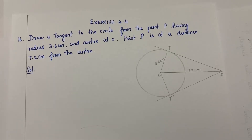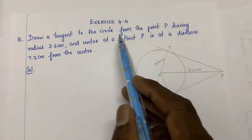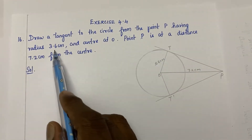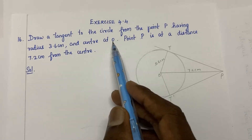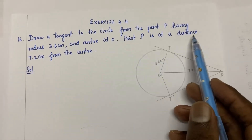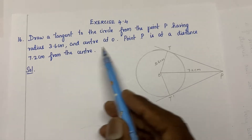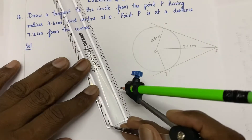Question number 16: Draw a tangent to a circle from point P, where the circle has radius 3.6 cm and center O. Point P is at a distance of 7.2 cm from the center. Set the compass to 3.6 cm to draw the circle.